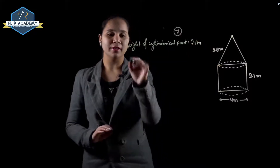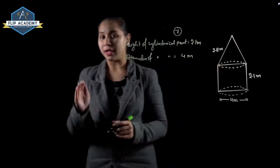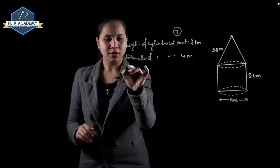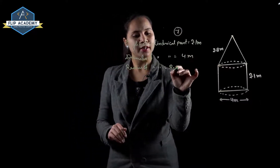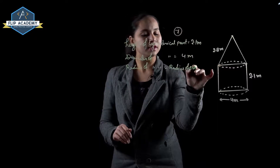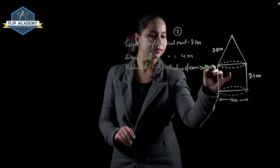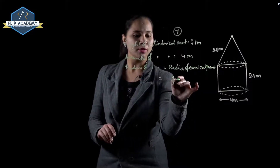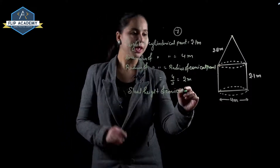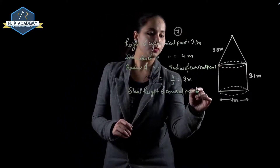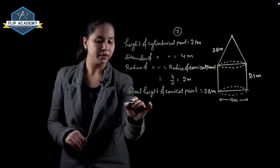Diameter of cylindrical part equals 4 meters, so radius of cylindrical part equals 2 meters. Radius of conical part equals radius of cylinder, so radius of conical part equals 4 upon 2, which is 2 meters. Slant height of conical part is given as 2.8 meters.